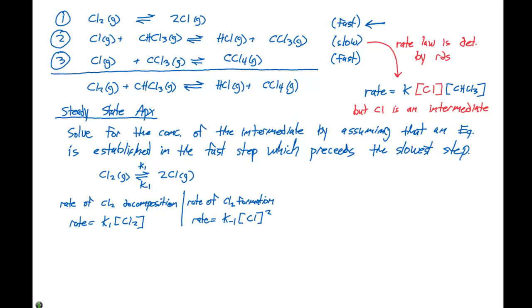If we assume this equilibrium is established, that means the rate of the forward reaction, which is the Cl2 decomposition, has to be equal to the rate of the Cl2 formation. So we can set these two equal to each other. That means K1 times Cl2 is gonna equal K minus one times Cl, that quantity squared.